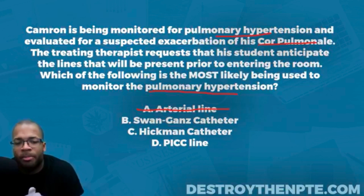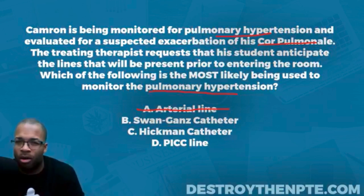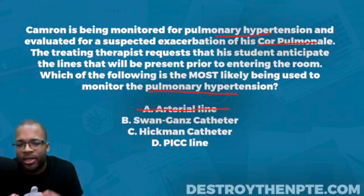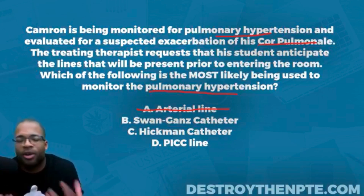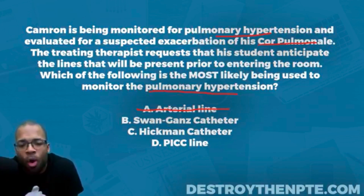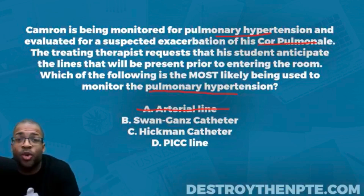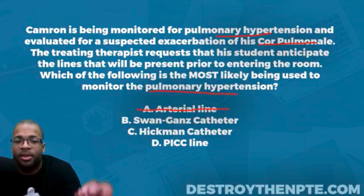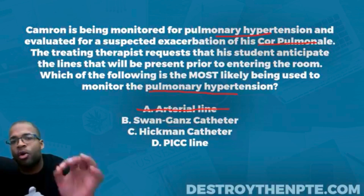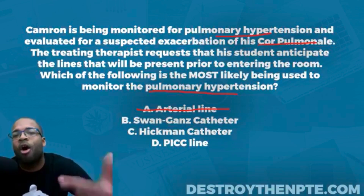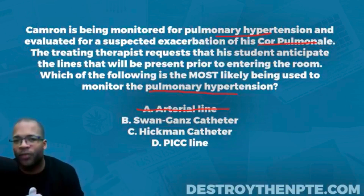I used to get questions wrong about arterial lines and Swan-Ganz catheters when preparing for the NBCE because I didn't know the other terms these lines were known by. The Swan-Ganz catheter is also known as the pulmonary artery catheter — the PAC. Don't forget that.